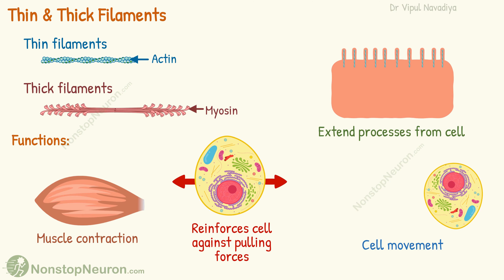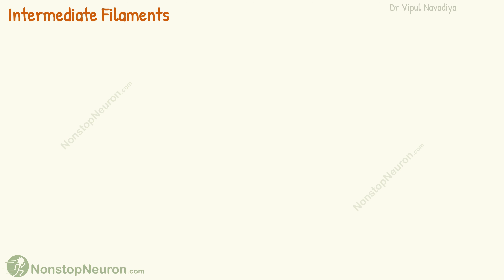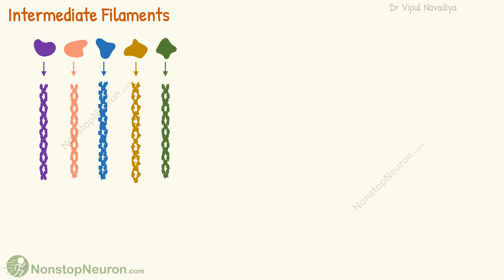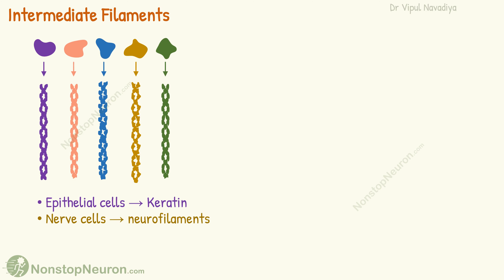Intermediate filaments have a large variety of subunit proteins. Expression of different subunits in different cells results in the formation of different intermediate filaments in different cells. For example, epithelial cells have keratins, nerve cells have neurofilaments, and muscle cells have desmin, etc.